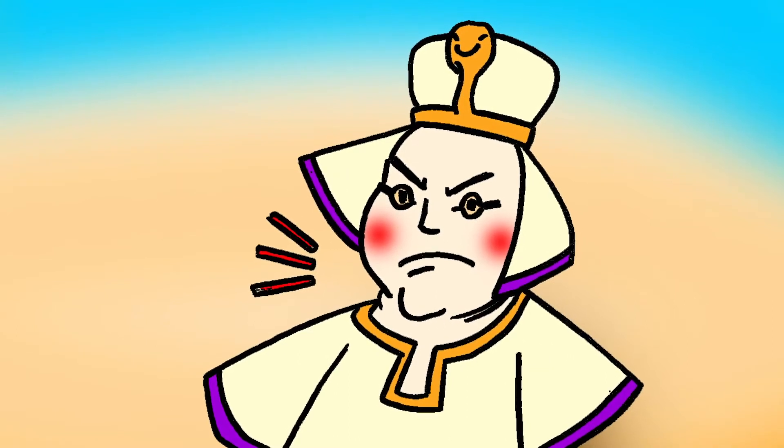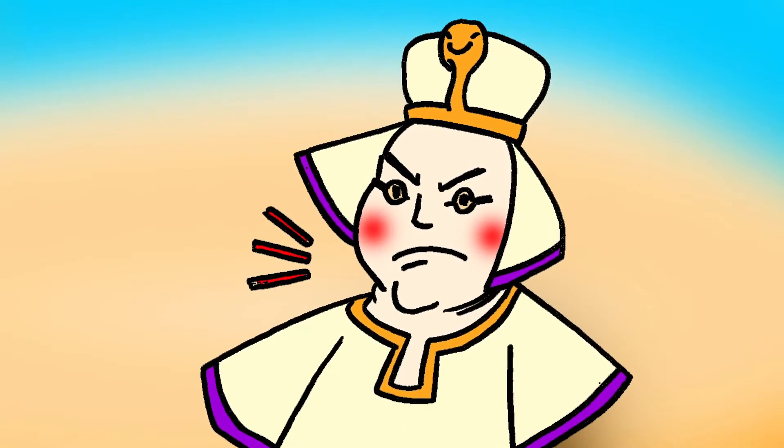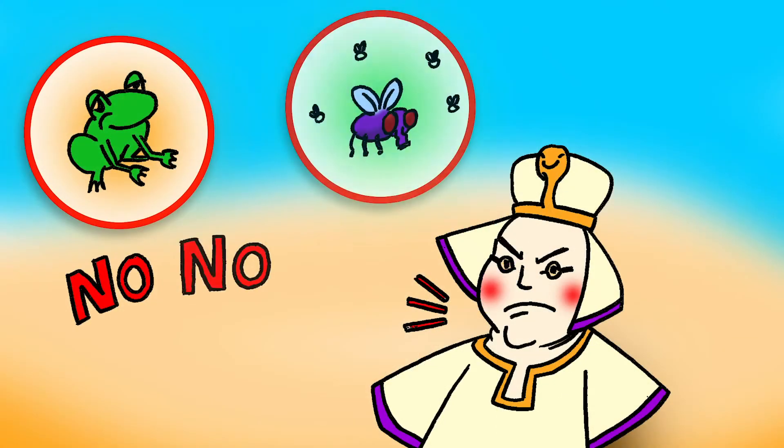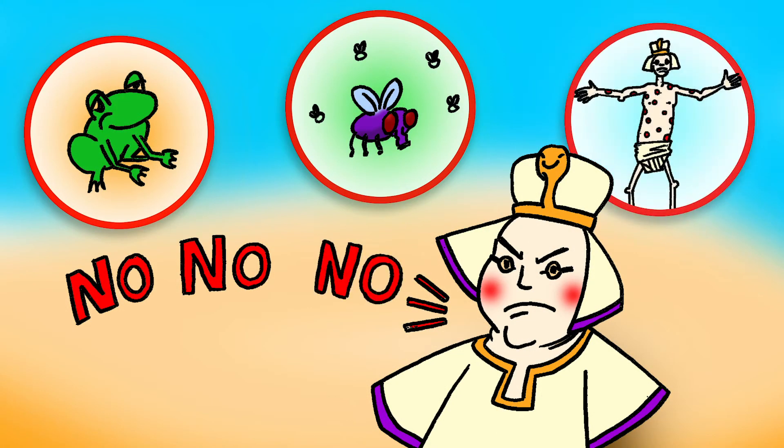Even after God sent several warnings to the king in the most unusual forms, like frogs and flies and nasty spots on the skin. But the king was very stubborn.